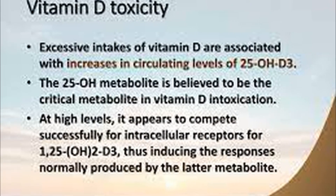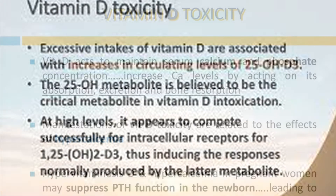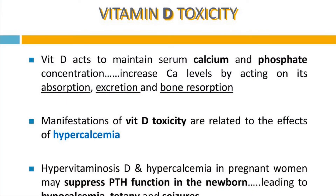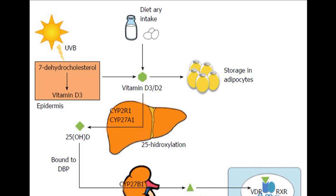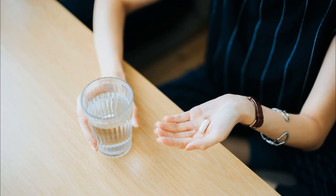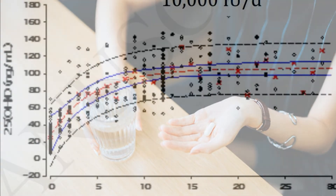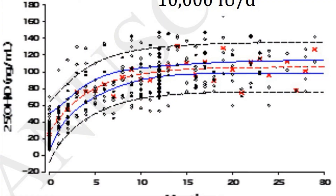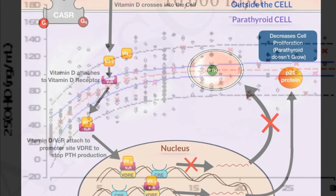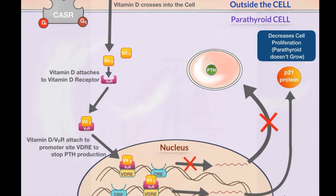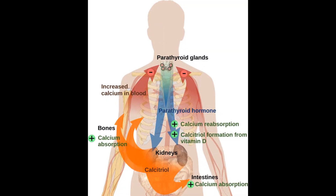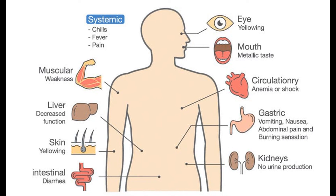Vitamin D toxicity is also called hypervitaminosis. Vitamin D toxicity does not result from sun exposure. The liver storage capacity is smaller for vitamin D than for vitamin A. Toxicity results when people take vitamin D doses of 10,000 to 50,000 international units per day over many years. Excessive amounts of vitamin D result in excessive absorption of calcium from the intestine and elevation of blood calcium levels. Symptoms of toxicity include loss of appetite, nausea, vomiting, diarrhea.